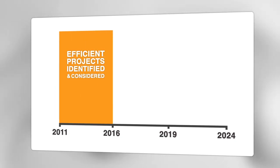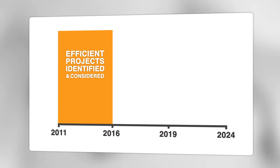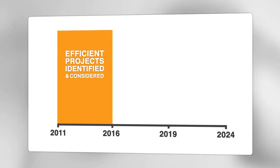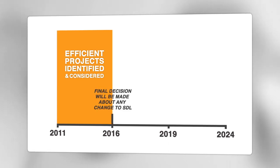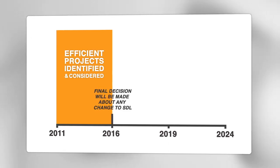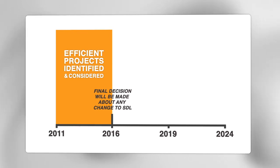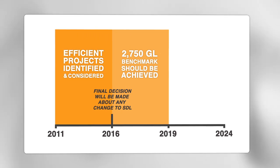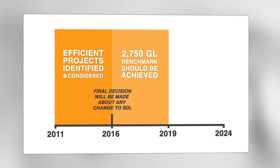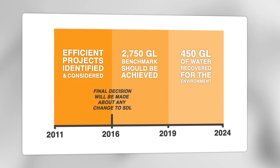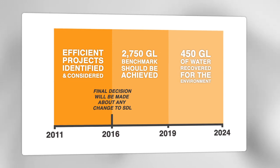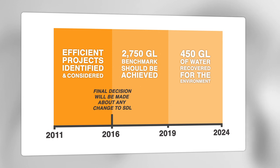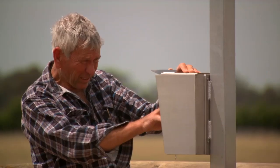Between now and 2016, projects that deliver equivalent environmental outcomes with less water can be identified and fully considered. In 2016, a final decision will be made about any change to the sustainable diversion limit allowed as the result of these projects. By 2019, the 2,750 gigalitre benchmark should have been achieved. By 2024, the additional 450 gigalitres will have been recovered and all the new environmental benefits from the additional water will have been met, without any disadvantage to irrigation communities.